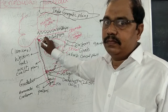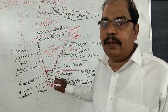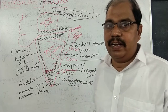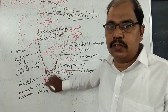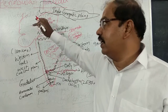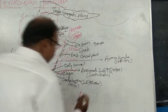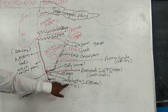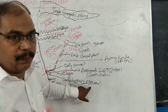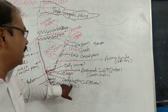The Western Ghats run continuously from Gujarat to Tamil Nadu, reaching the southernmost city of Kanyakumari. The height of the Western Ghats exceeds 2000 meters and the length is about 1600 kilometers. The highest peak in the Western Ghats is Dodabetta, with a height of 2637 meters.